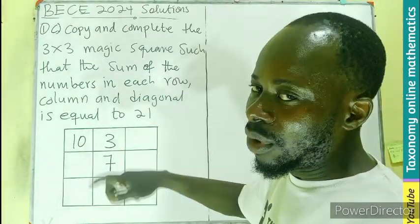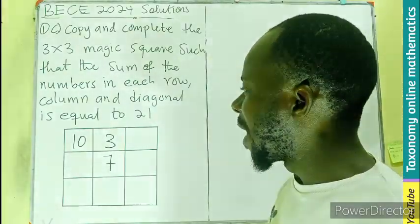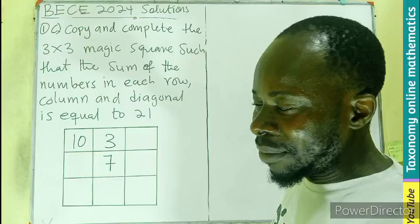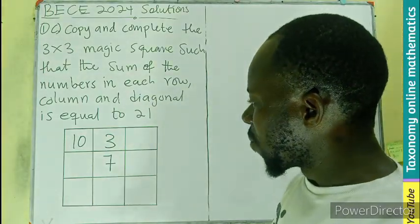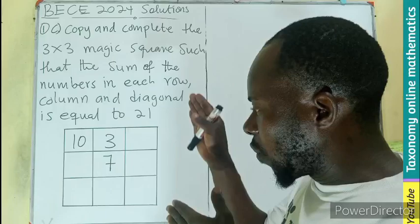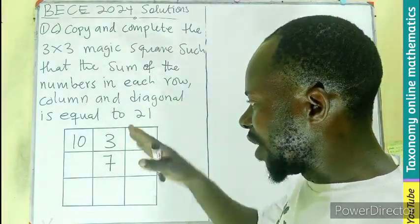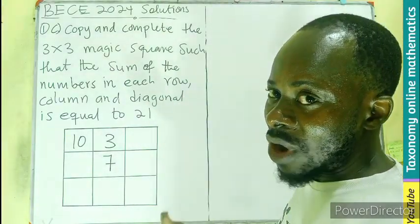So in case 7 is not here, you could have used that property to arrive at the middle number, the magic number. Now since we are going row, column, and diagonal, when we add we need to get 21.